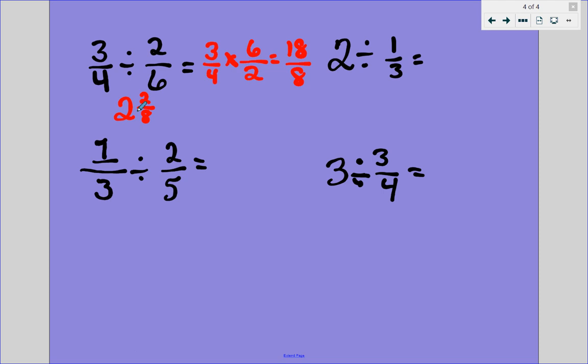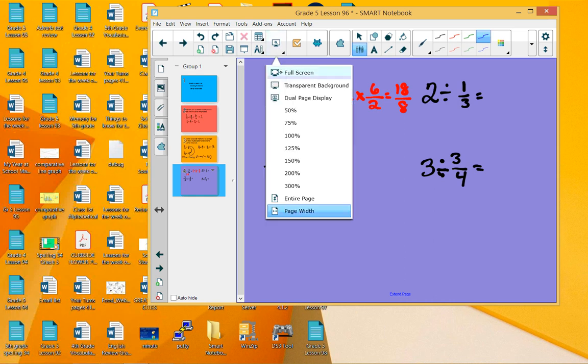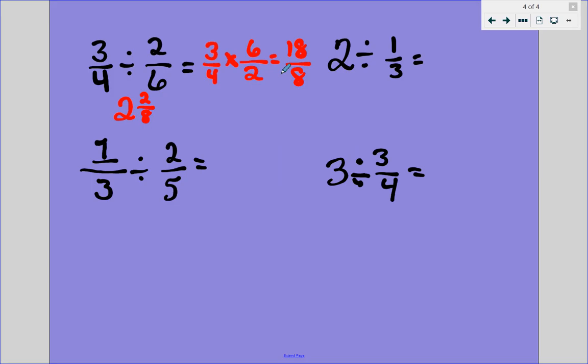The one over here, we keep the one-third the same. We change the division to multiplication. And this is where we do the reciprocal. Instead of 2 over 5, we have 5 over 2. 1 times 5 is 5, 3 times 2 is 6. So our answer to 1 third divided by 2 fifths is 5 sixths.